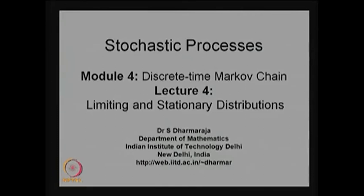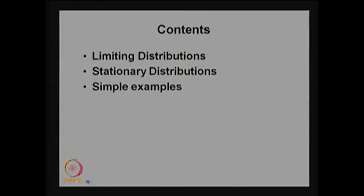In the last three lectures we have discussed the time-homogeneous discrete time Markov chain. In Lecture 3 we discussed classification of states — concepts and definitions — but we did not discuss simple examples for that. So in this lecture I am planning to give a few examples for the classification of states, then the definition of limiting distributions, followed by stationary distributions, and then explain how to get the stationary distribution if it exists.